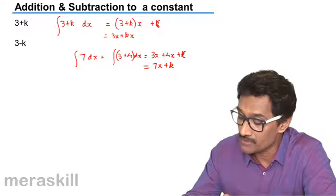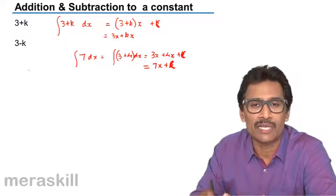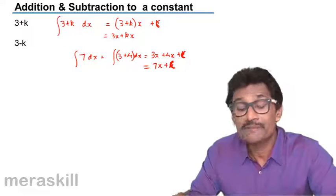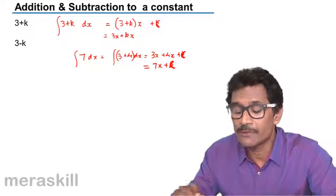Now, this constant obviously is not the k mentioned over here. It is some other constant. Much the same way in case of 3 minus k too. Now, here we have taken a case wherein you have to find the integral of 3 plus k into dx.